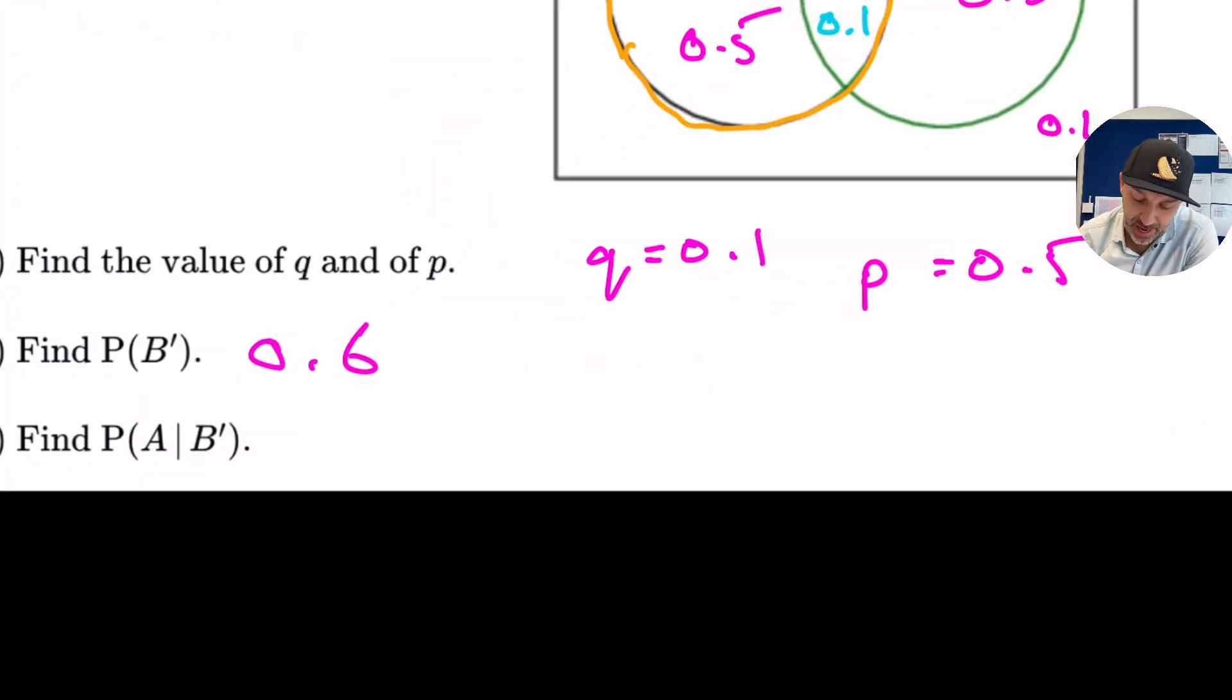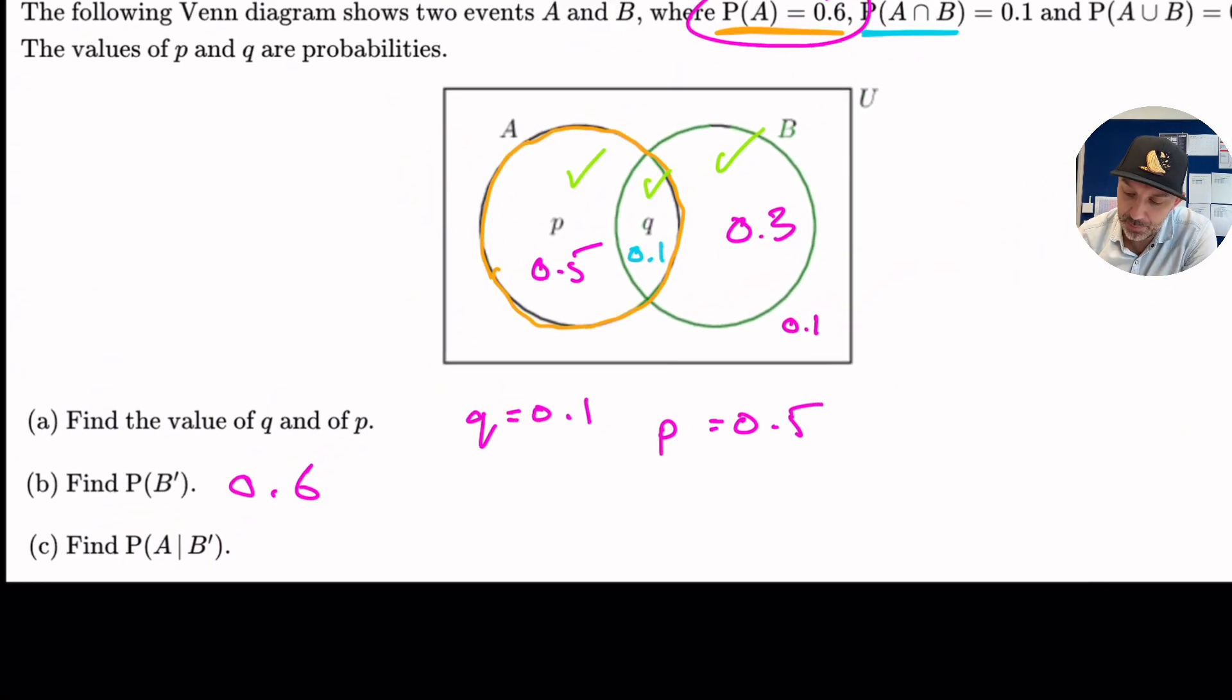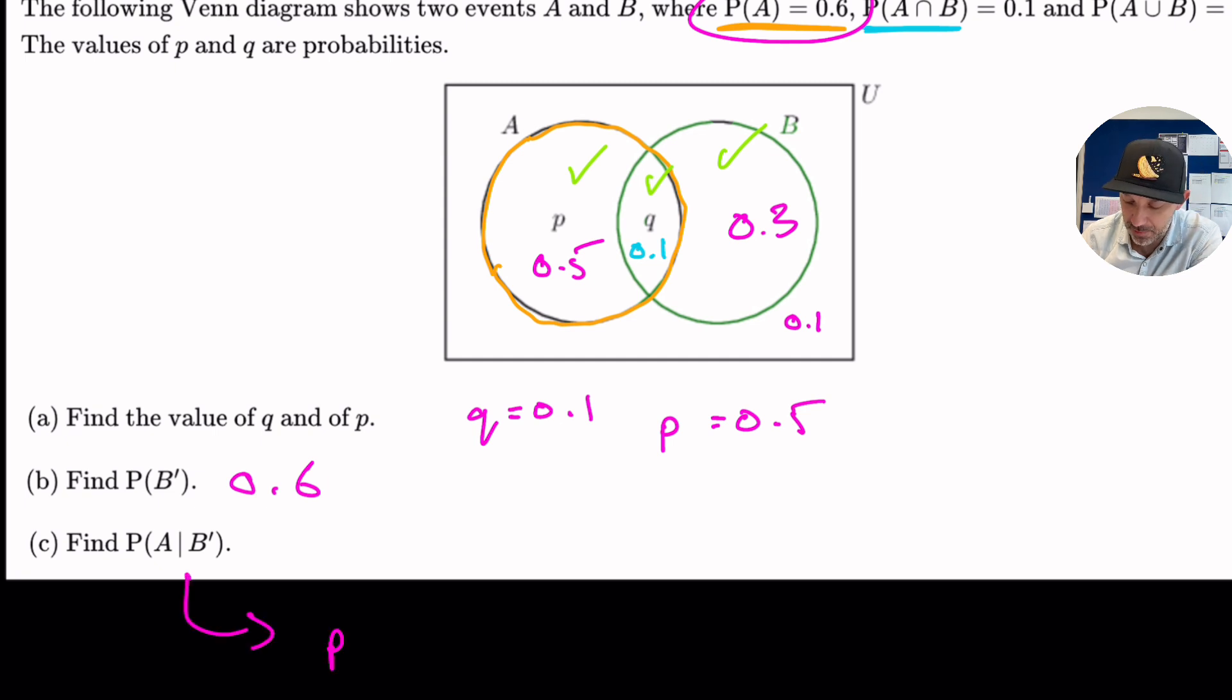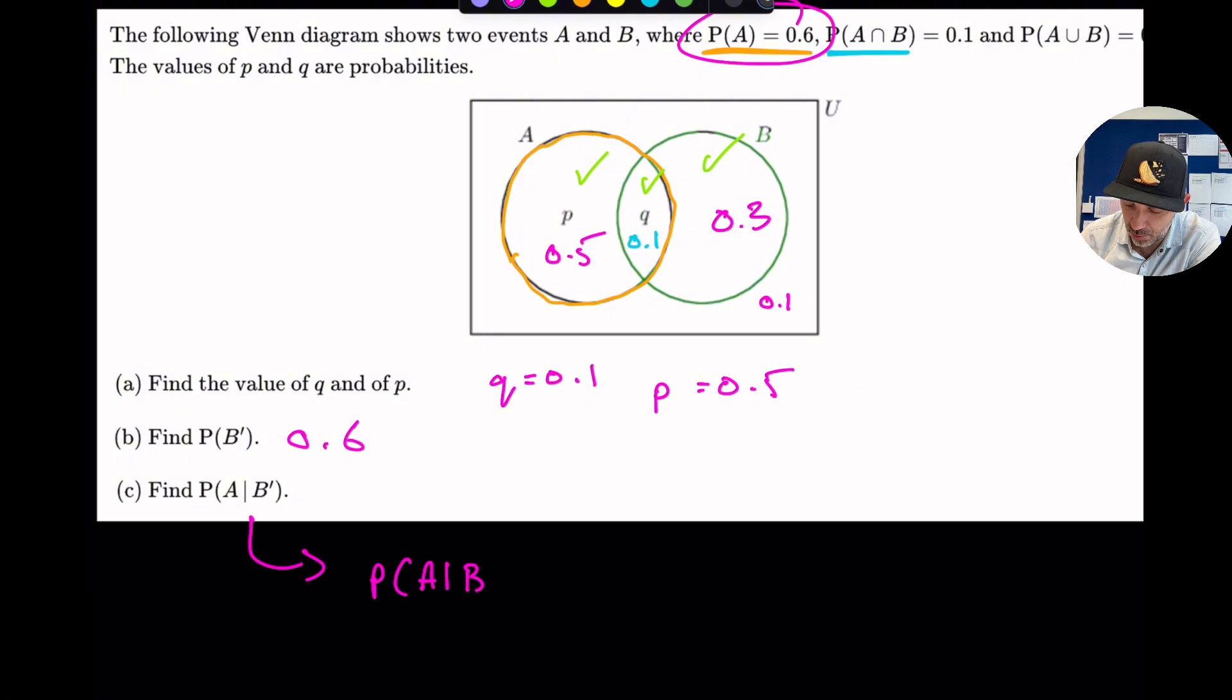Find the probability of A given not B. So the formula, remember when we go into the exam or it is in the formula booklet if you're doing the IB, A given not B is the probability of A and not B over the probability of not B. Okay. So there is a little bit of a reason why they ask you to find this in part B is because we've already found not B. So we've already found the denominator that is 0.6.